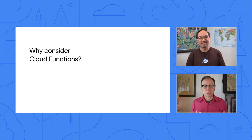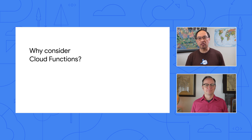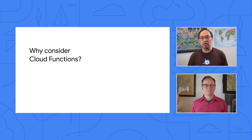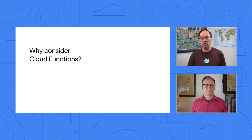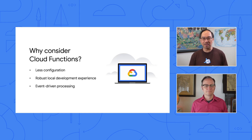What I want to know is why we'd want to migrate an App Engine app to Cloud Functions. One key reason is that you didn't have much code to begin with, but App Engine was all we had available. Other reasons include less configuration, more robust local development experience, and the ability to do event-based background processing.